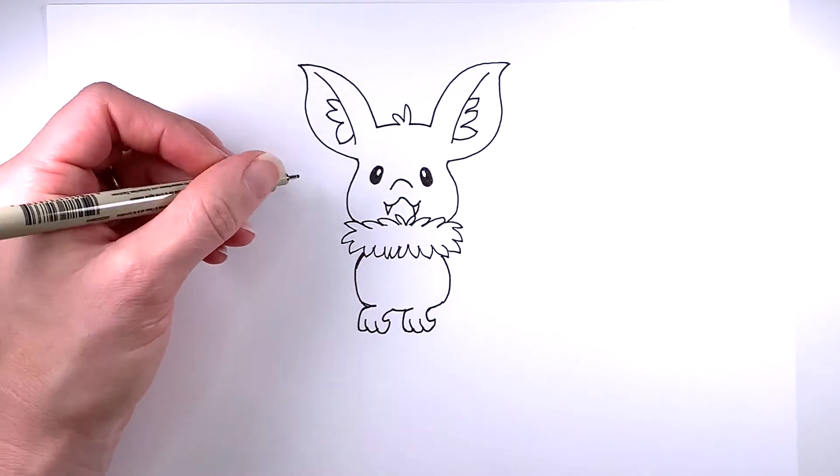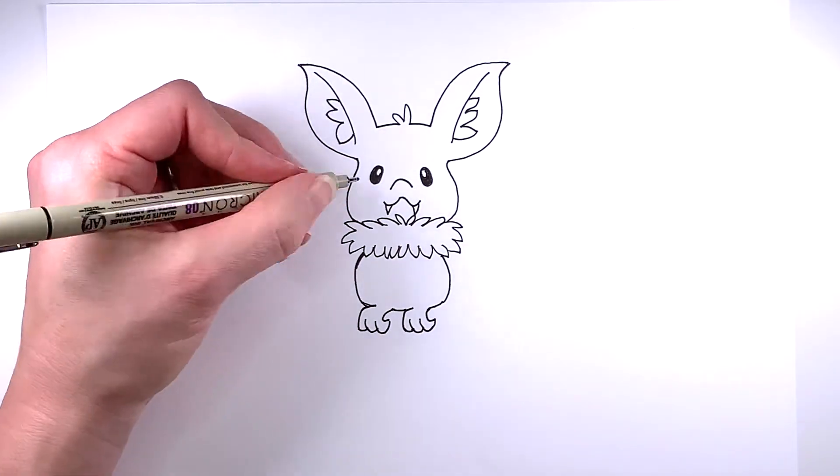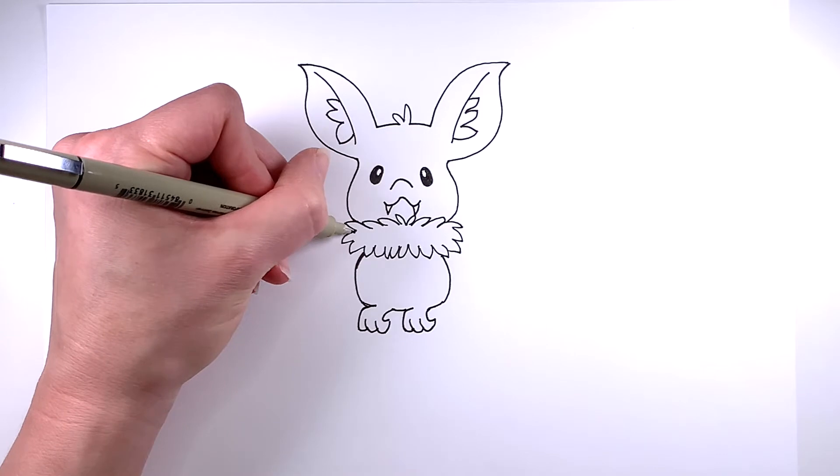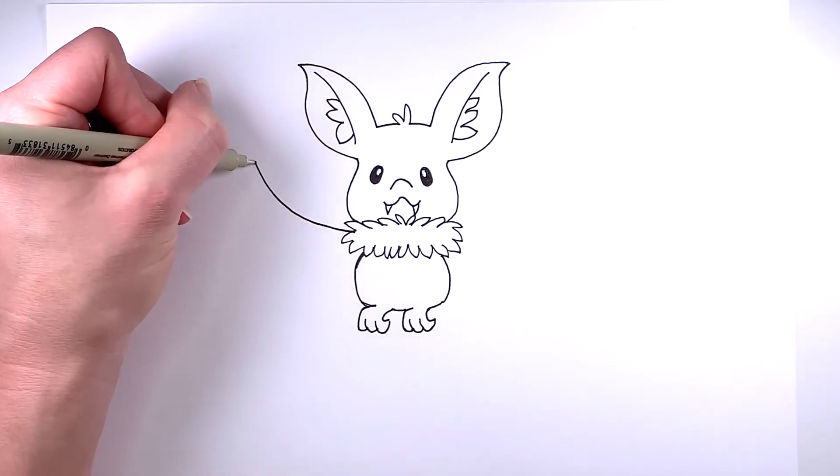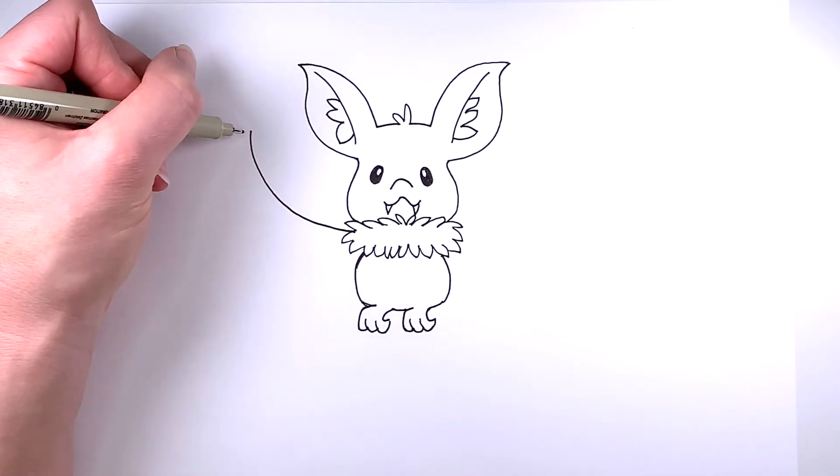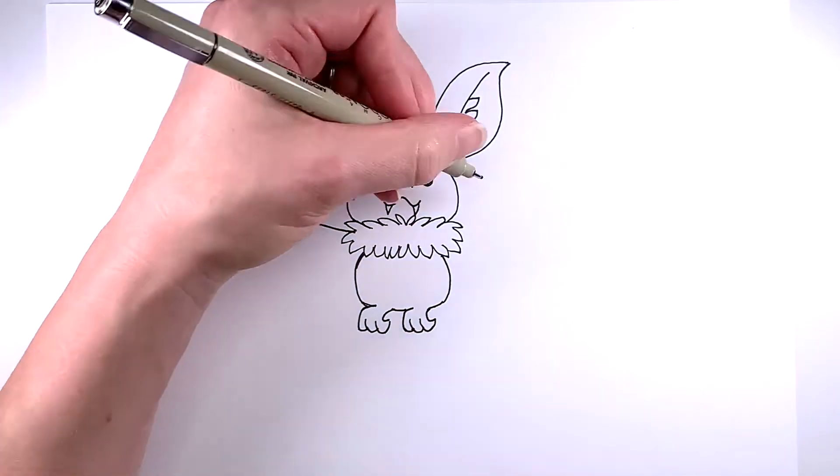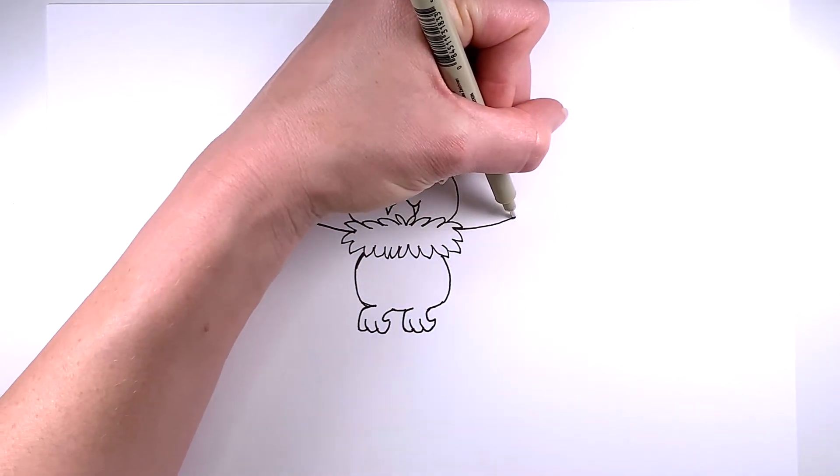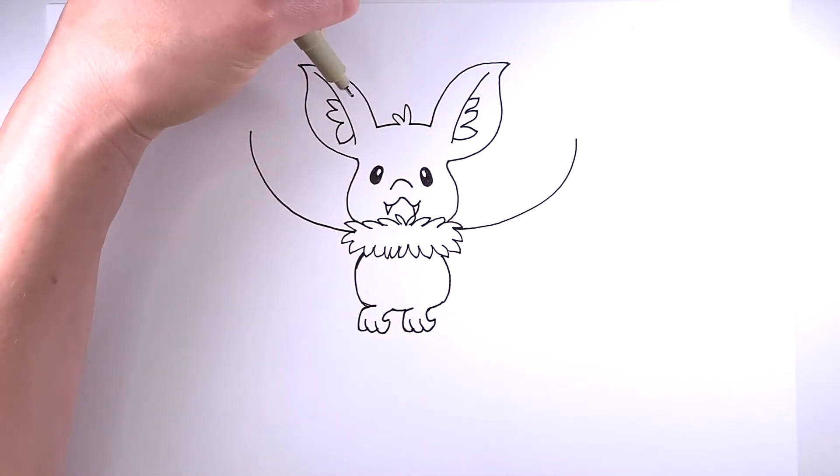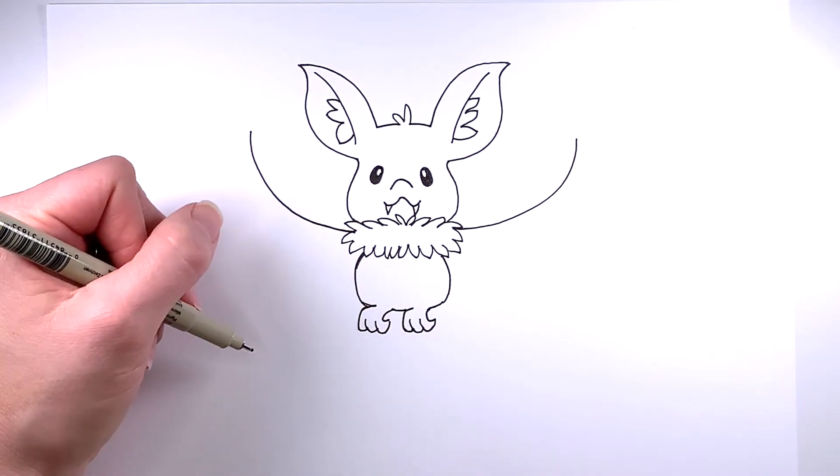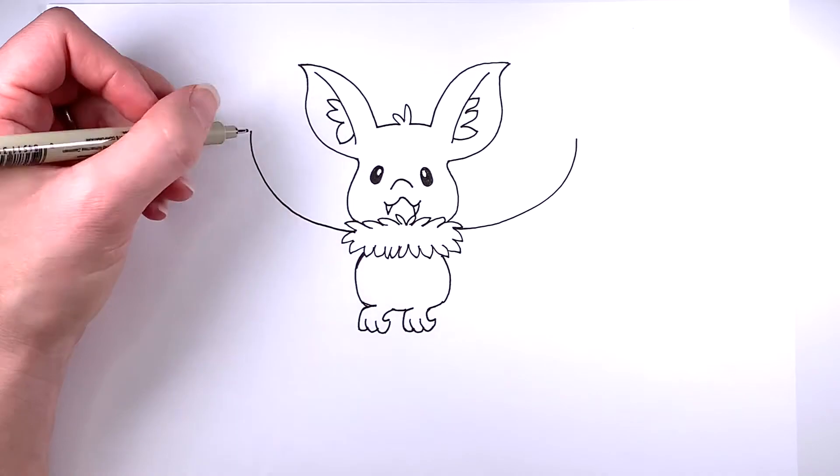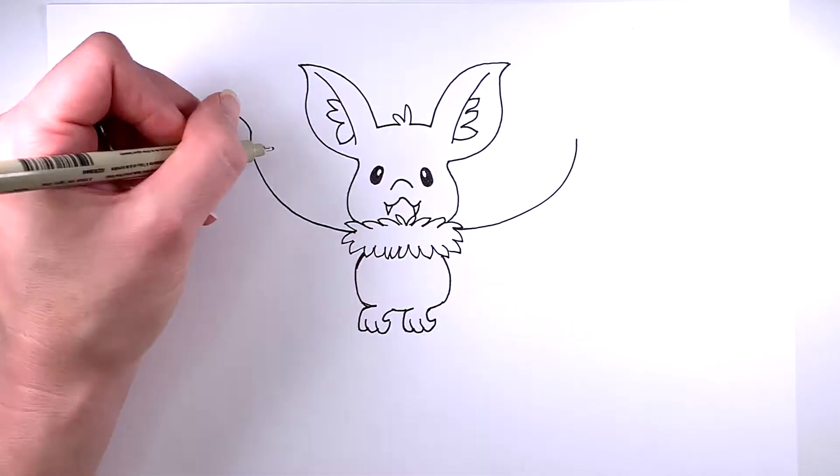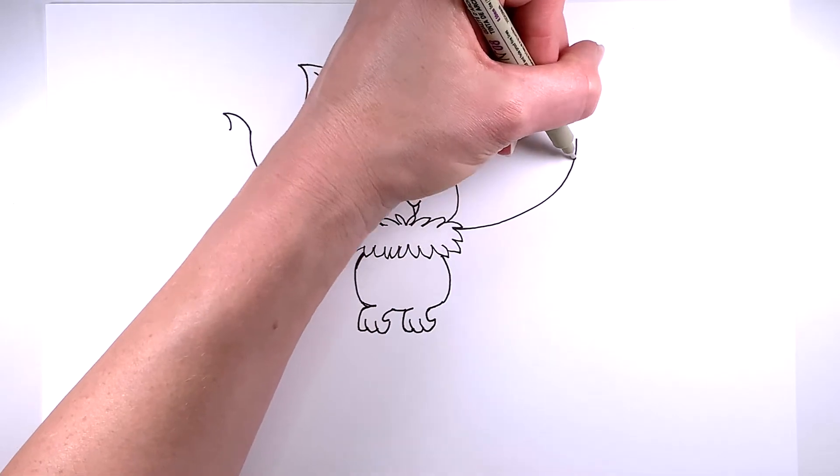And now for the fun part, the wings. You're going to be drawing a nice sweeping line up toward the top of your paper. And just repeat that on the other side. And now at the top of each of those lines, you're going to make a claw. And just repeat on the other side.